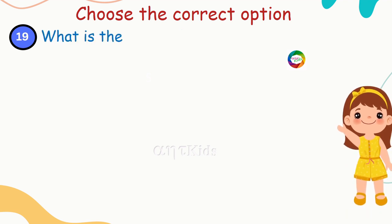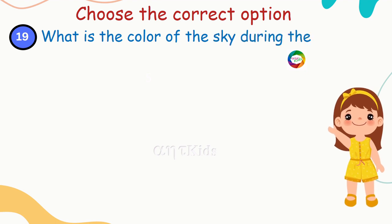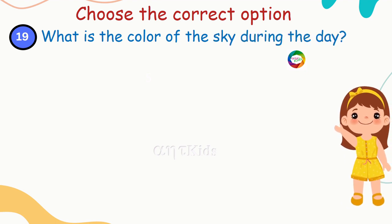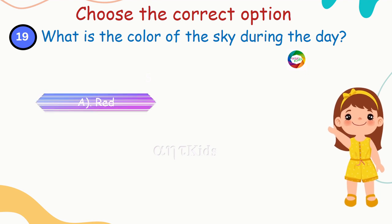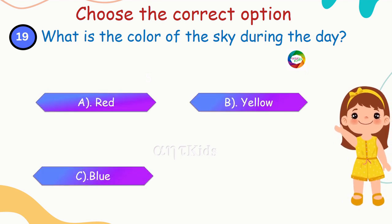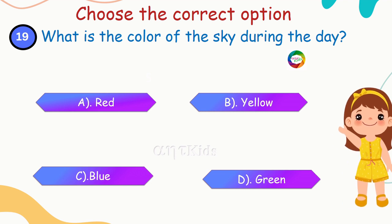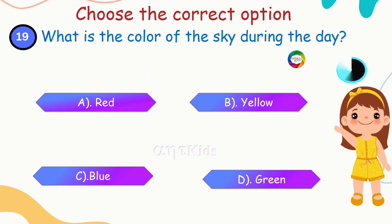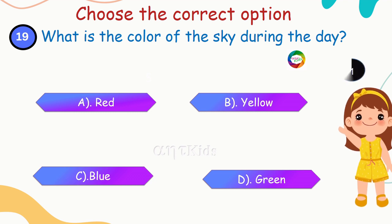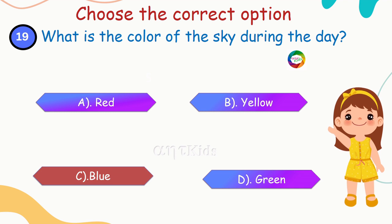Next question: what is the color of the sky during daytime? Options: red, yellow, blue, green. Yes, it is blue — you're right!